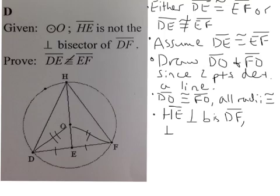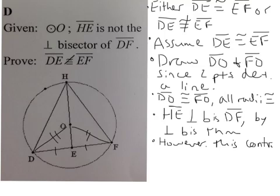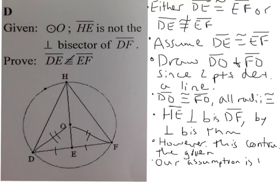So, perpendicular bisector, by the perpendicular bisector theorem. However, this contradicts the given. Our assumption is false. Therefore, I'm going to do the three dots for therefore. DE is not congruent to EF. And that is that for our proof by contradiction.